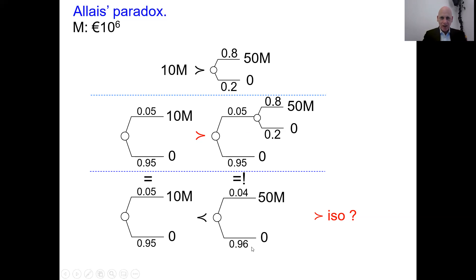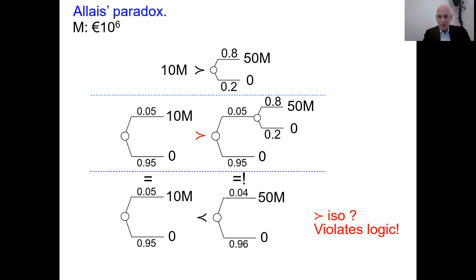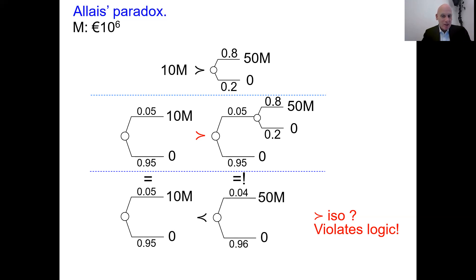That means the whole middle and lower choice situations are identical — they are the same thing. If you say the right option is better in the lower situation, then it must also be better in the middle situation. You must have the same choice in both. But the majority preference doesn't satisfy that, so it cannot be rational. This is just a matter of logic — violating logic — and there cannot really be a debate about it.